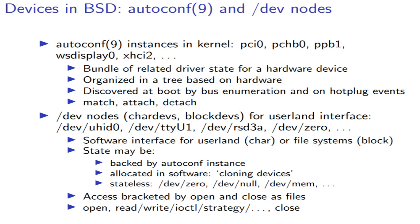When you use device nodes, you open them first, then you can do IO — read, write, ioctl — and then close them. Or strategy, which is how you submit a block IO request to a block device. You'll have to ask Kirk why it's called strategy.